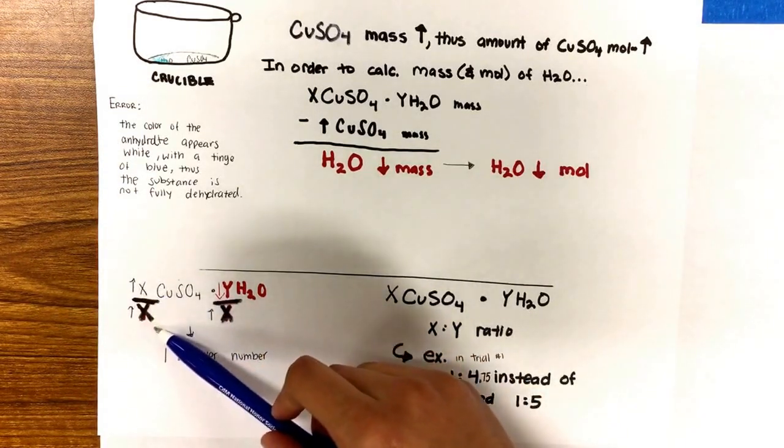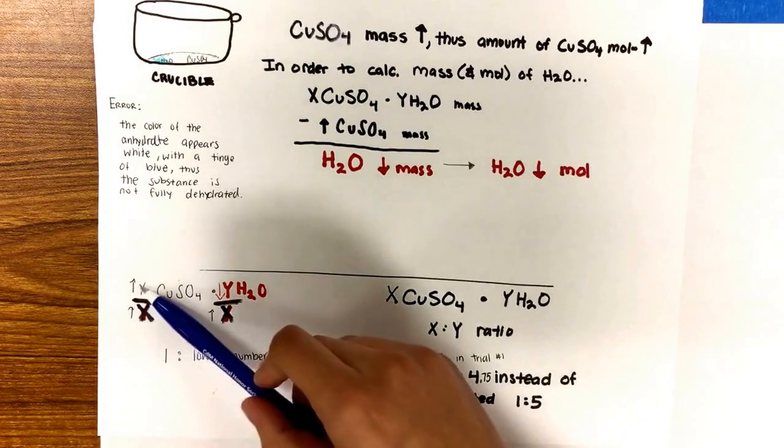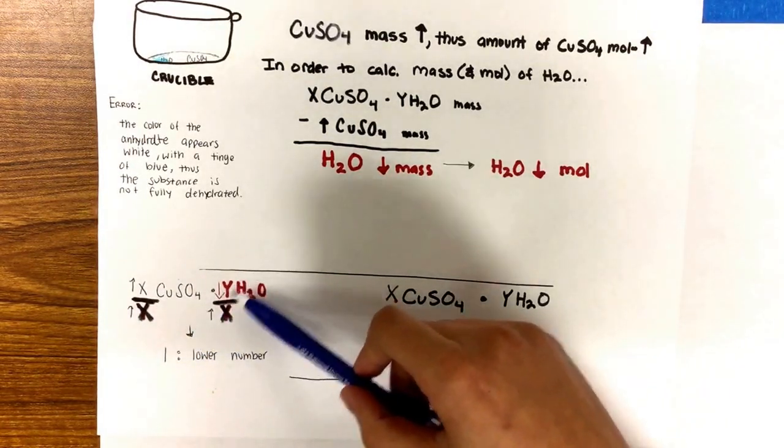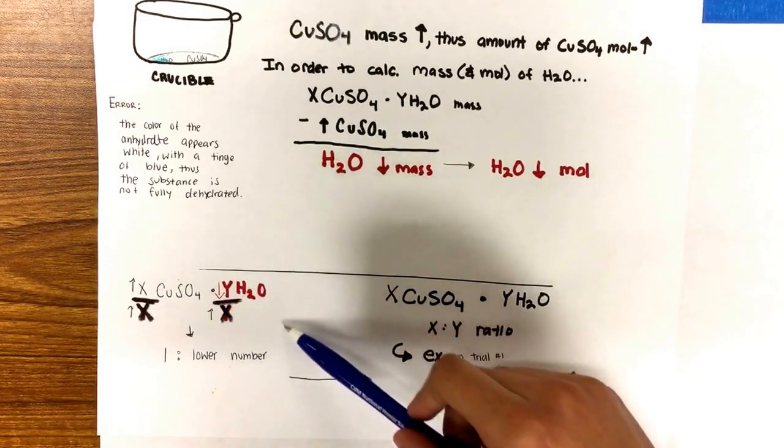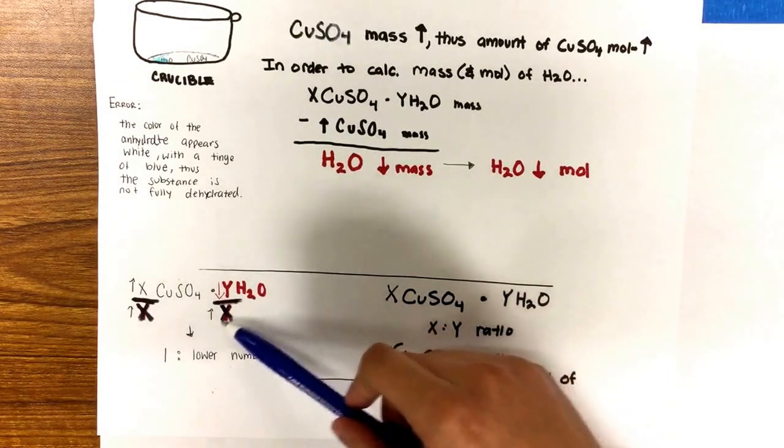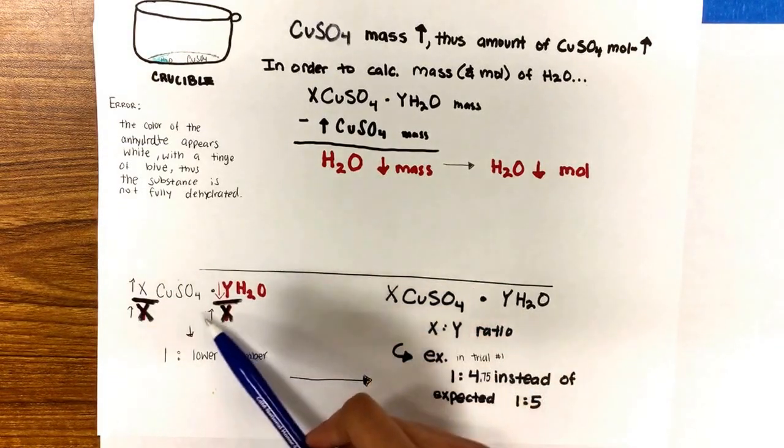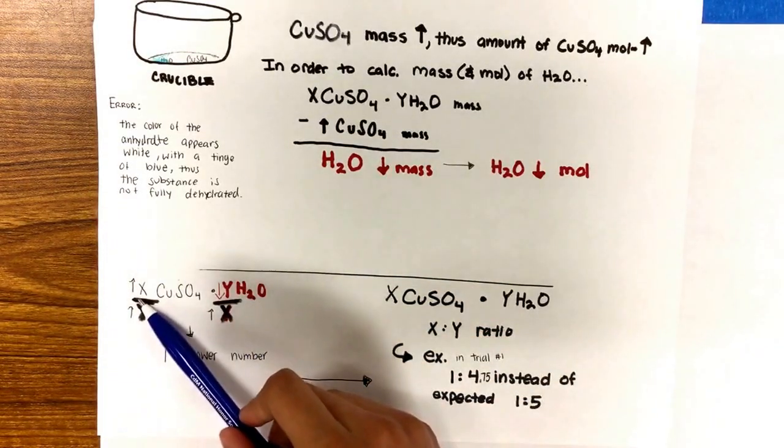You divide by X and you get 1 because X divided by X is 1, and then Y, which is the decreased amount of H2O that is present, is divided by the X which is the number of moles of CuSO4.